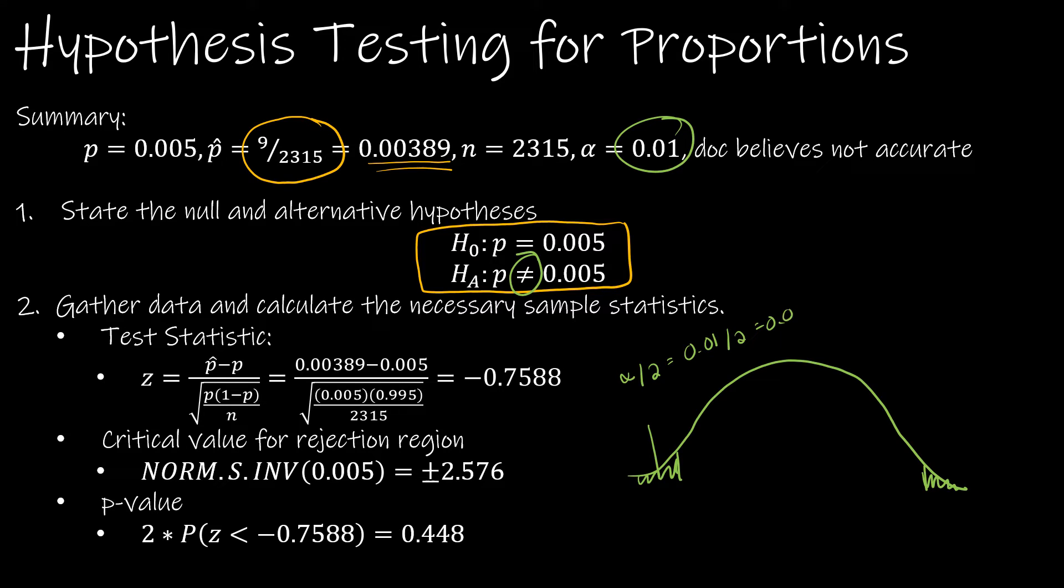And that's why that's the number that I have to use for the norm.s.inv function, so that I can find that this value is negative 2.576 and this value is positive 2.576.